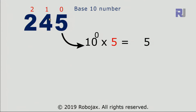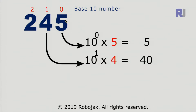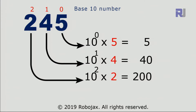The positions are 0, 1, and 2 from right to left. Because it's base 10, we take 10 to the power of the position and multiply by the digit value. Any number to the power of 0 is 1, so 1 × 5 = 5. Then 10 to the power 1 = 10 × 4 = 40. Then 10 to the power 2 = 100 × 2 = 200. Adding them all: 5 + 40 + 200 = 245.